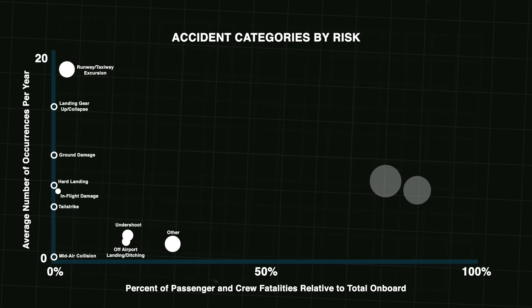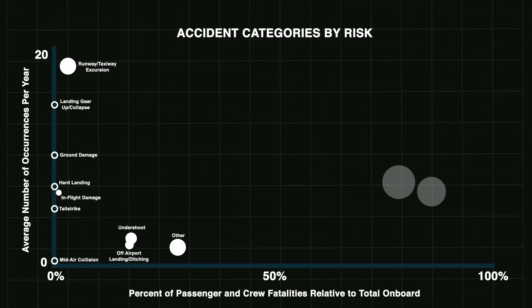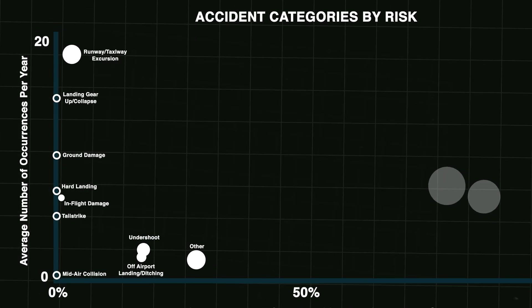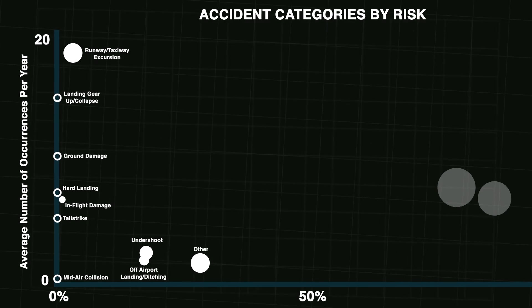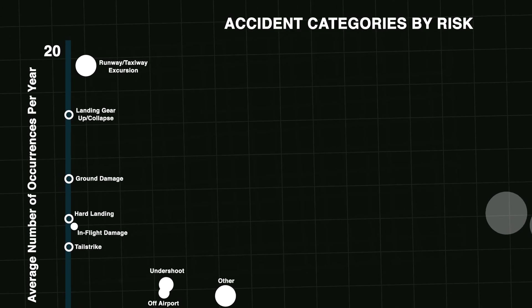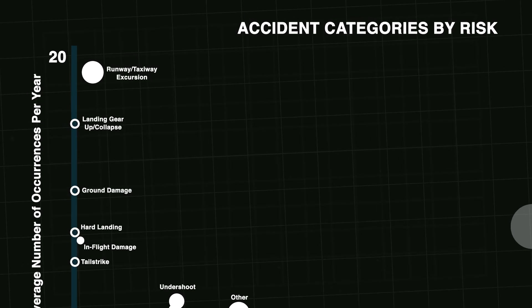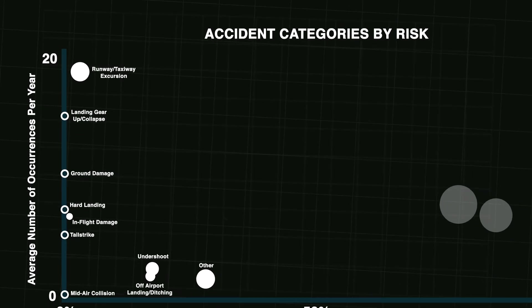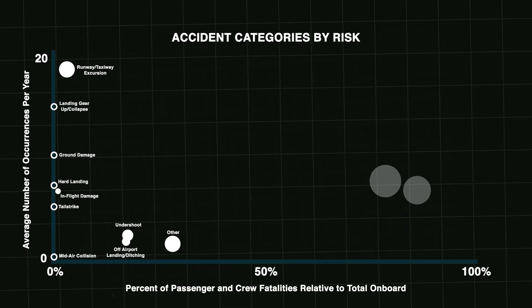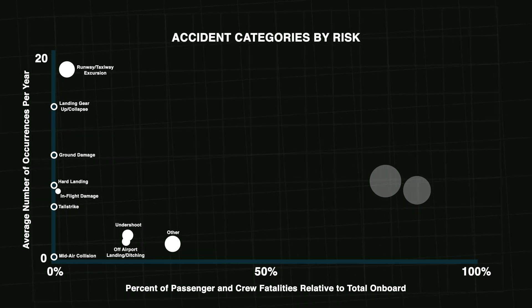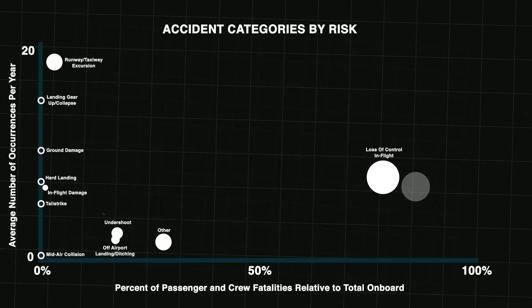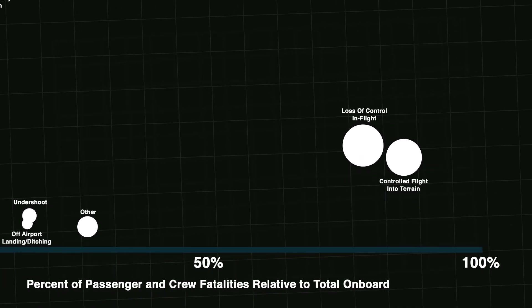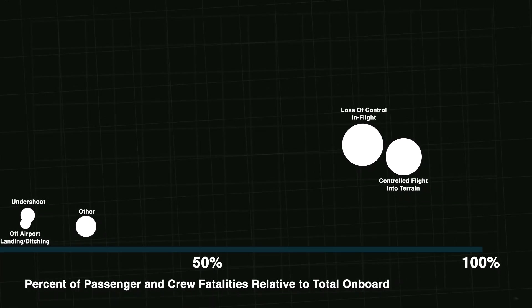So, 10 out of the 12 categories are actually quite far to the left on our scale — a testament to the level of safety in modern-day aviation. Some are more frequent, but they generally tend to be less fatal. The last two categories, though, are probably terms you've heard before, because they make up the vast majority of fatal accidents: loss of control in flight, and controlled flight into terrain. When they occur, they kill.